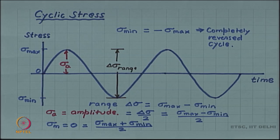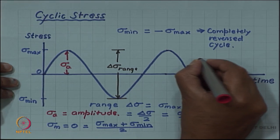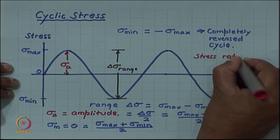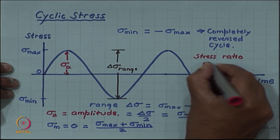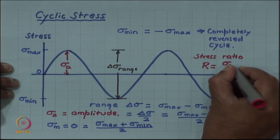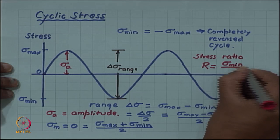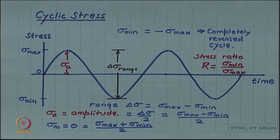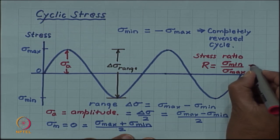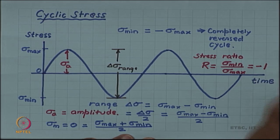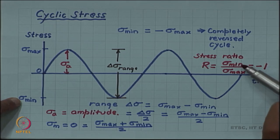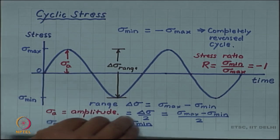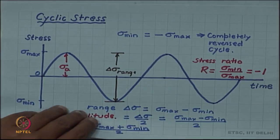One more parameter we define called the ratio R, the stress ratio, which is defined as sigma min by sigma max. In this case for a completely reversed cycle this will be minus 1, because sigma min being compressive is negative but is equal in magnitude to sigma max which is tensile and so is positive. So the ratio becomes minus 1.